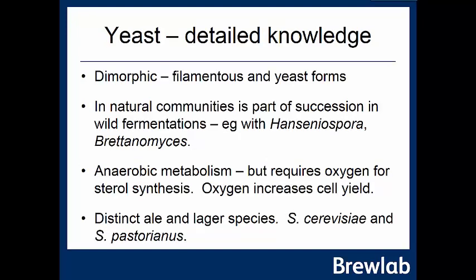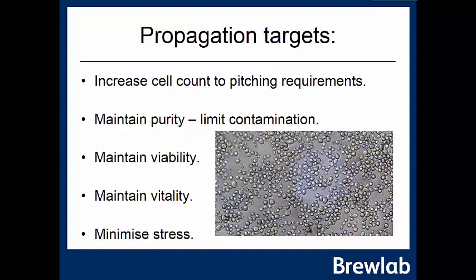Some further details: yeast is dimorphic, showing two different forms — a filamentous and a yeast form — which indicates the species and whether there's stress on the yeast. In natural communities, a wild fermentation would see a succession of yeast species through different stages. Within Saccharomyces we have anaerobic metabolism, but oxygen is required at the beginning of fermentation to produce sterol synthesis to assist membrane development. Oxygen also increases cell yield, which is why we use it in propagation. The distinct ale and lager species are Saccharomyces cerevisiae and Saccharomyces pastorianus.